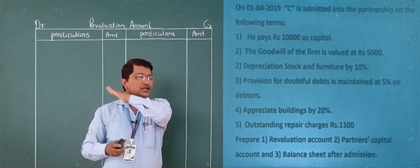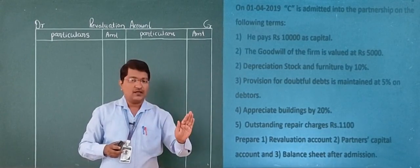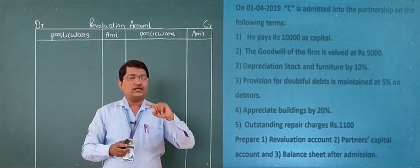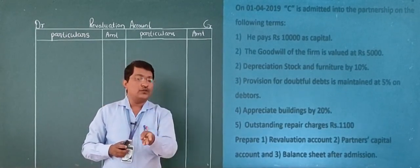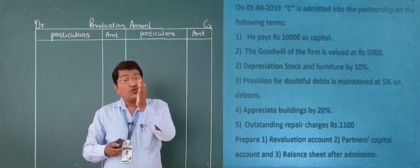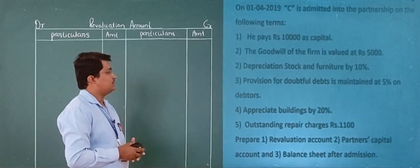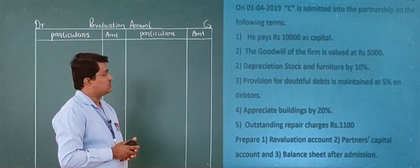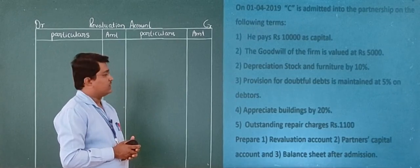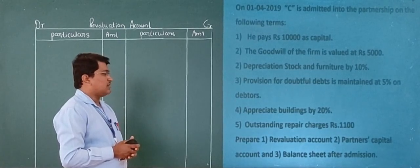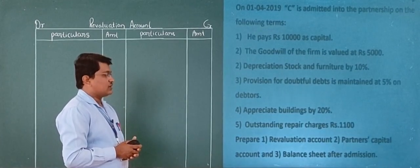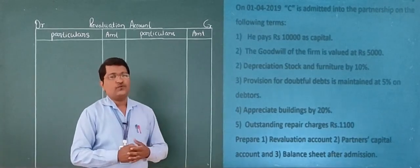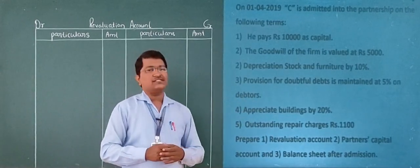In this case, the new partner has not brought the amount of goodwill in cash — goodwill is only valued. The situations we discussed earlier were: goodwill of the new partner is retained, fully withdrawn, or half withdrawn. Now, depreciate stock and furniture by 10%. Provision for doubtful debts is maintained at 5% on debtors. Depreciate building by 20%. Outstanding repair charge Rs. 1,100. Prepare a revaluation account, partners' capital account, and balance sheet after admission.